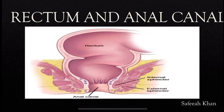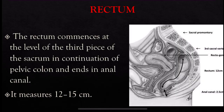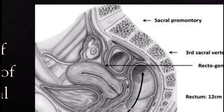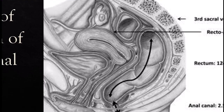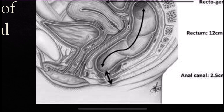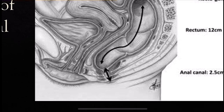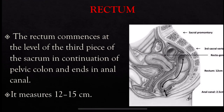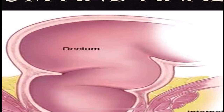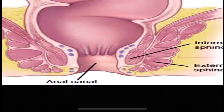In this video, we are going to discuss the anatomy of the rectum and anal canal. The rectum commences at the level of the third piece of the sacrum. It is a continuation of the pelvic colon, ending in the anal canal, measuring about 12 to 15 cm.